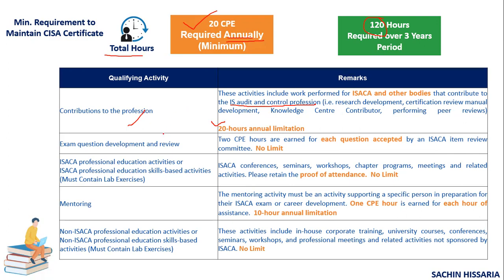The second qualifying activity is exam question development and review for ISACA. You can submit your own exam questions, and if your question is accepted by ISACA you will get two CPE hours per question. You can also attend ISACA conferences, seminars, workshops, chapter programs, and meetings. All professional education activities done for ISACA qualify for CPE credit, and you need to maintain proof of attendance. There is no limit for this category.